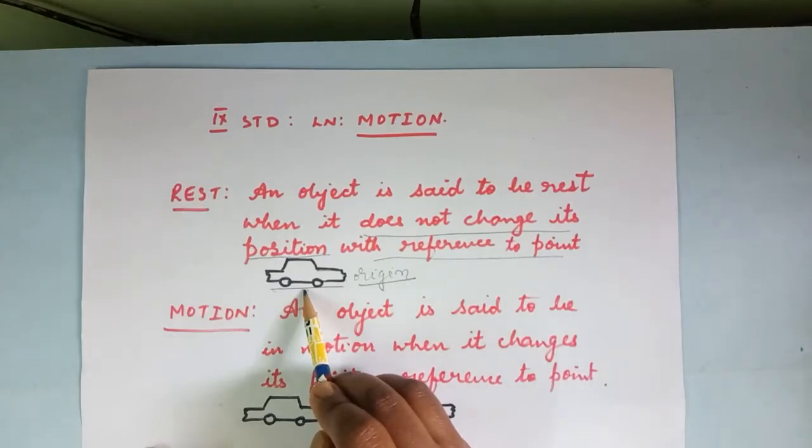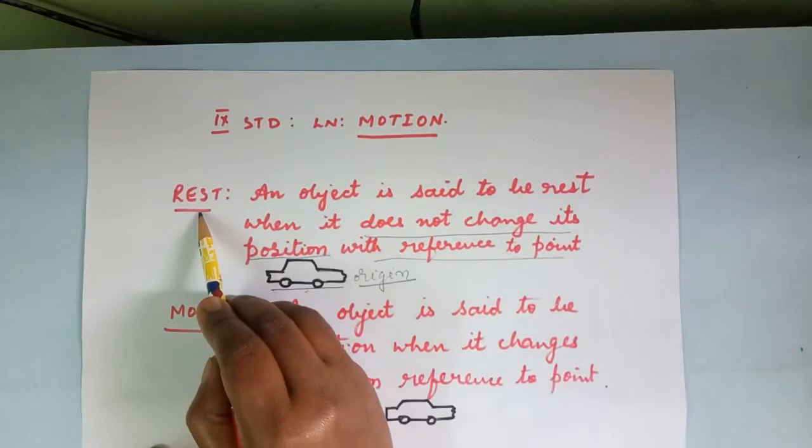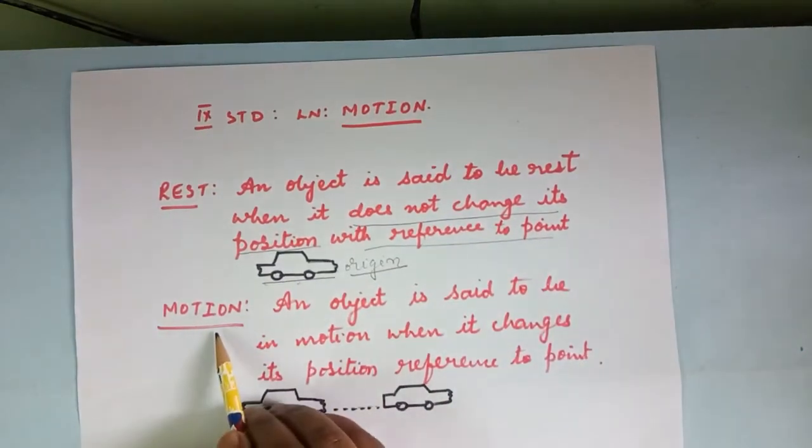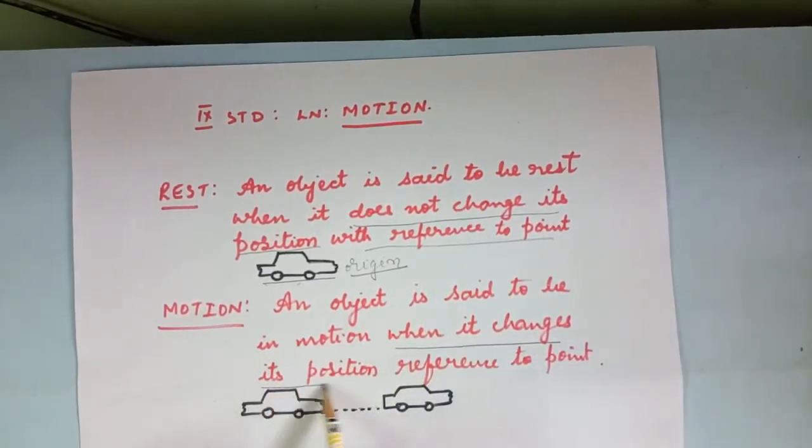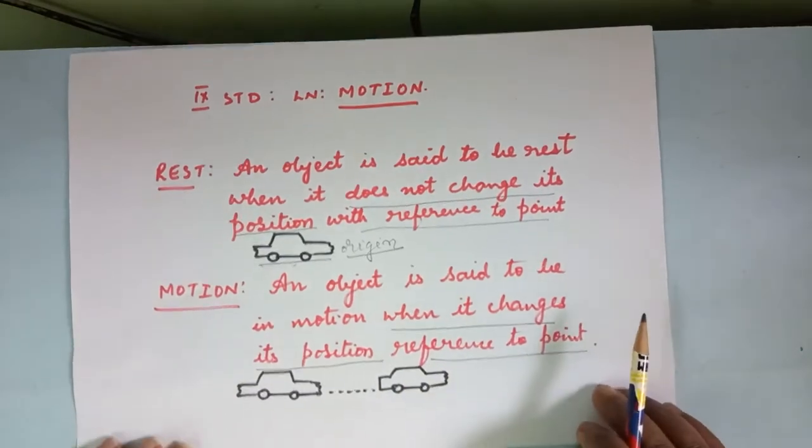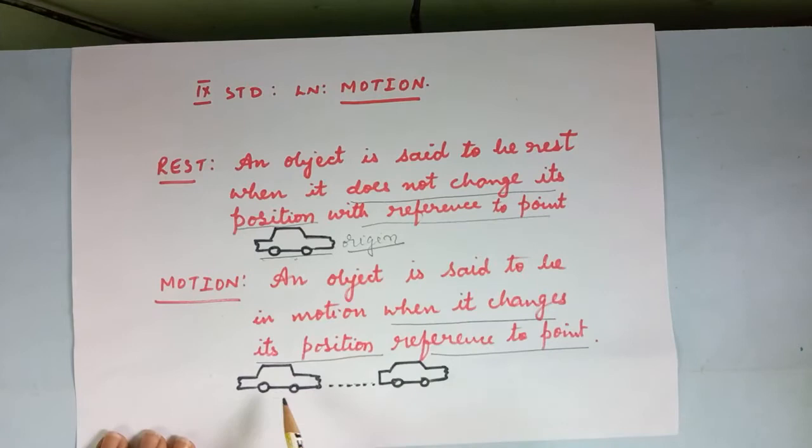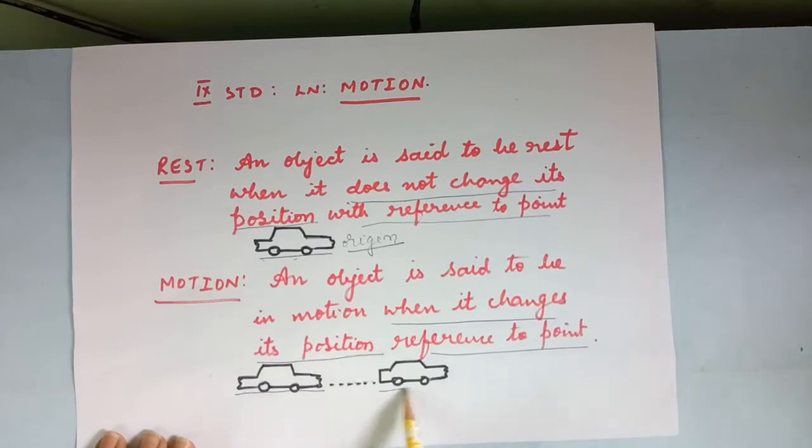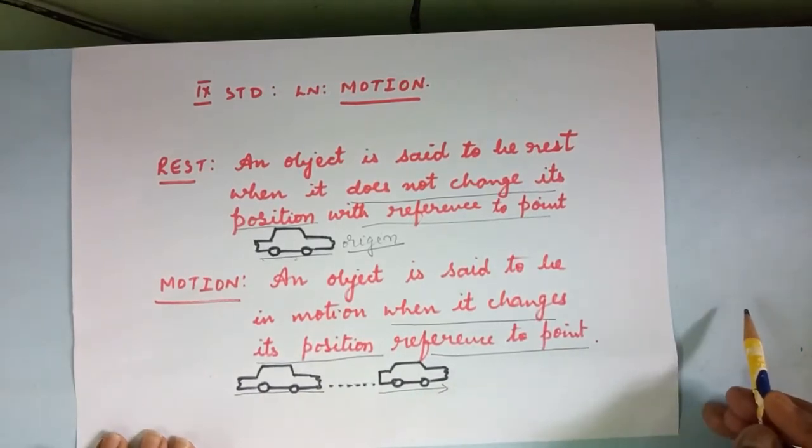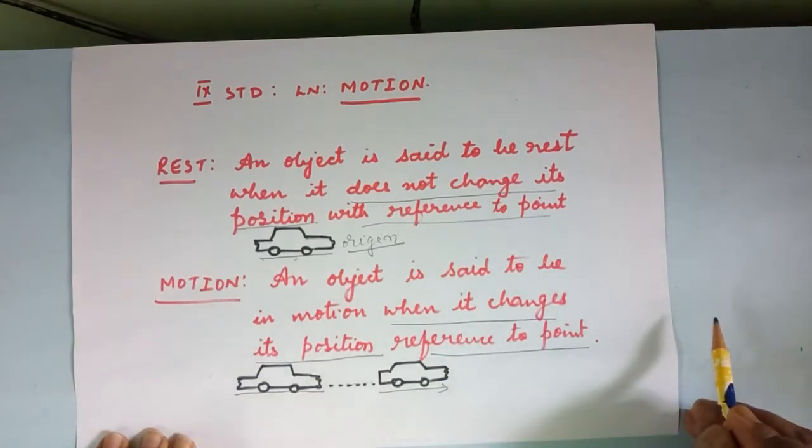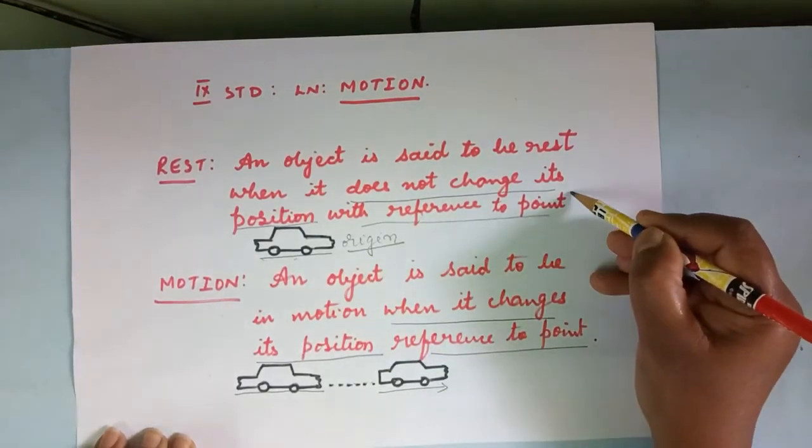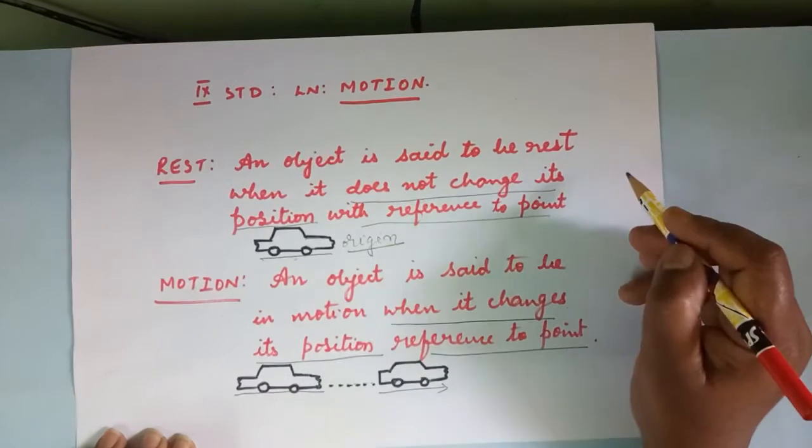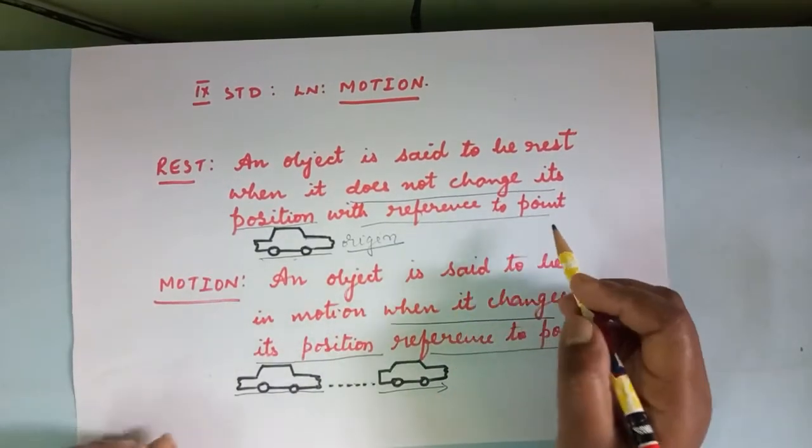Next, motion meaning. Any object is said to be in motion when it changes its position with the reference to the point. That means this is the position of the vehicle and this vehicle has moved forward. That means from this position to this position, the vehicle has moved. Then we say it is in motion. So motion means the position of the object changes. Rest means where the position of the object do not change with reference to point as well as time also.